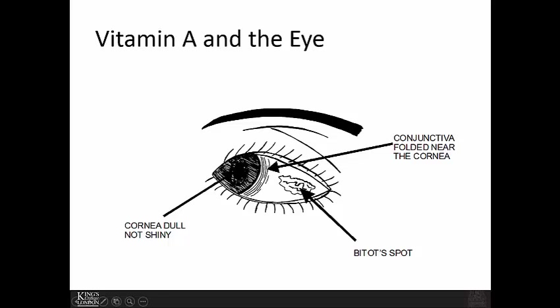A Bitot spot appears in the cornea and looks like a dull scar, scratch, or cloudy bubbling lesion. There is also a dulling of the cornea so it doesn't look as shiny, and in the conjunctiva you get folding immediately adjacent to the cornea.